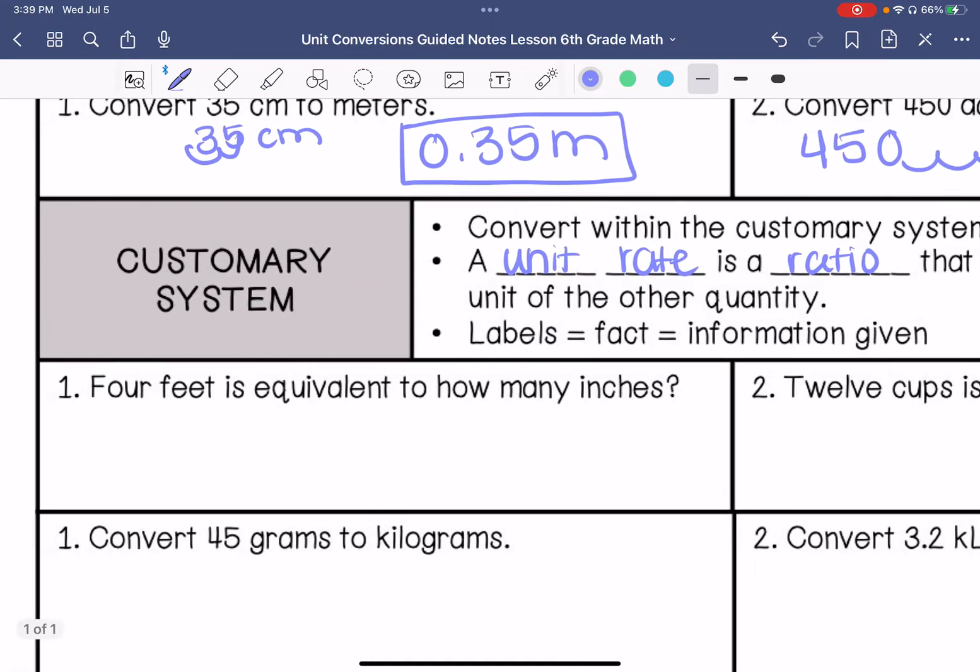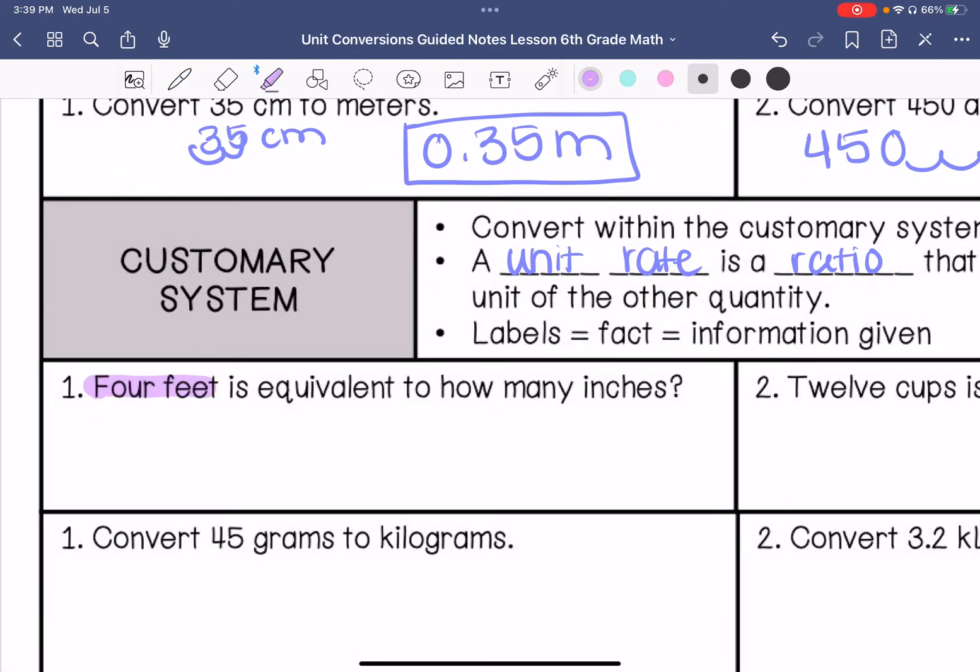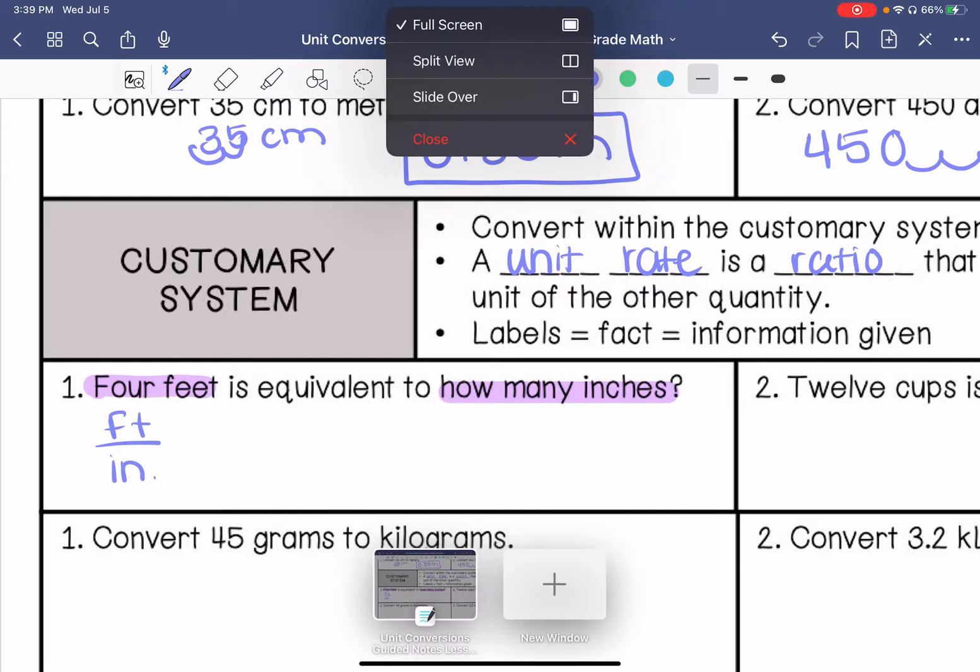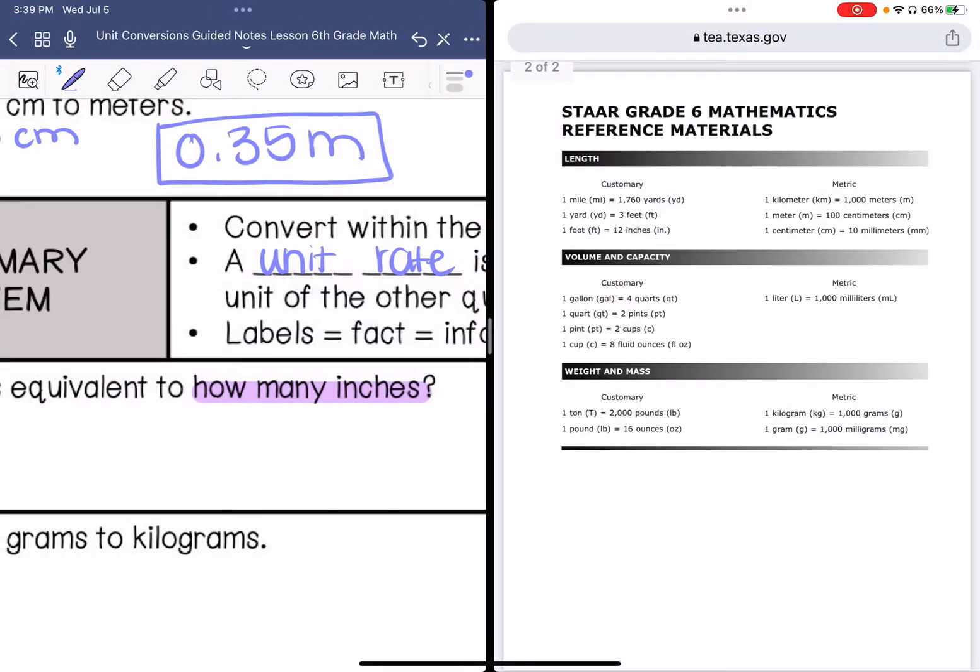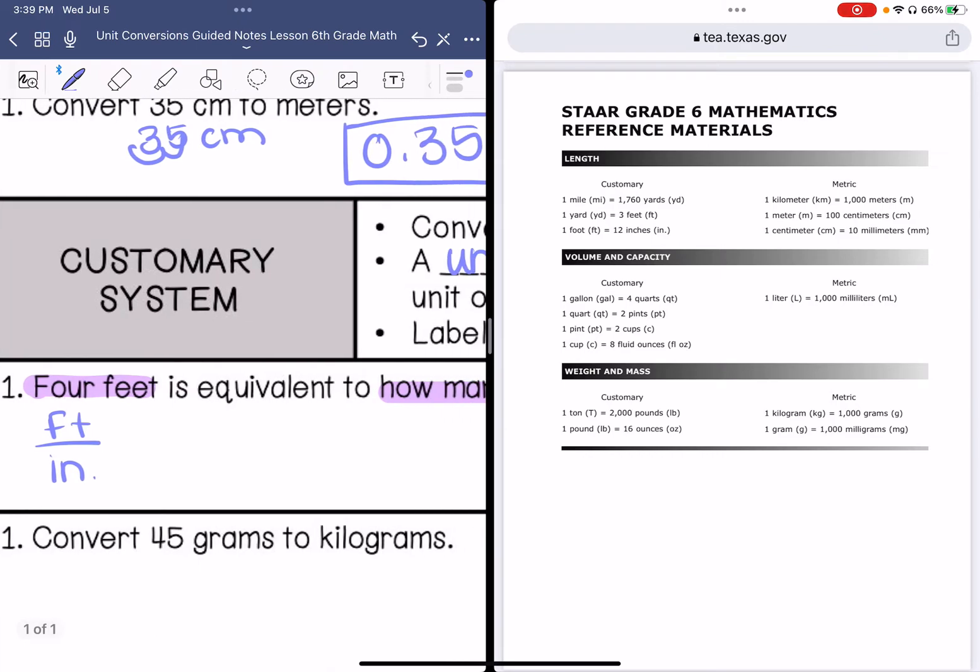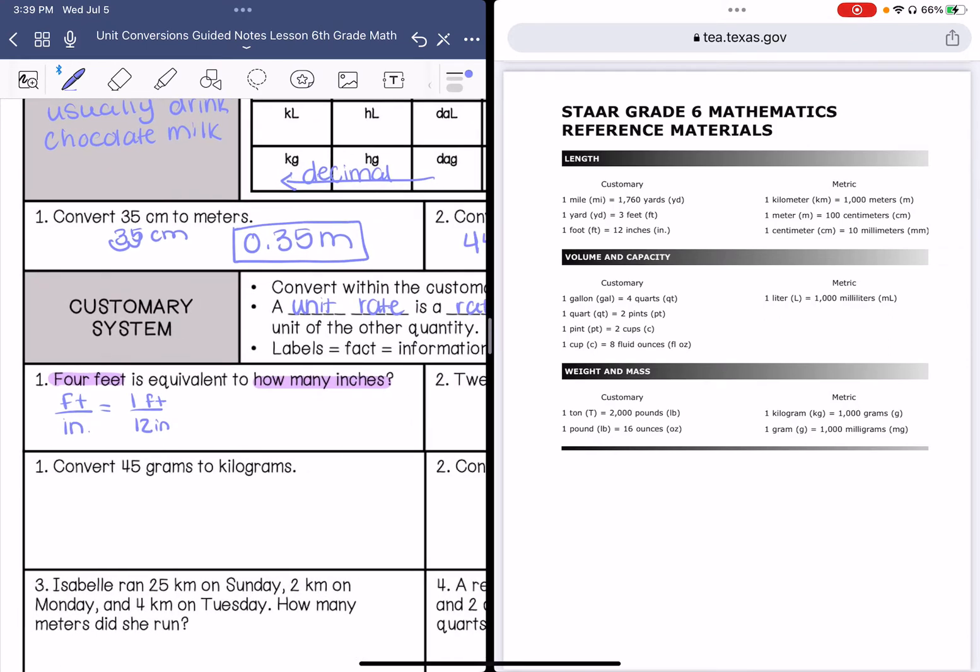For example, it says four feet is equivalent to how many inches. So I'm going between feet and inches. I'm going to pull up my STAAR reference chart, and it says that one foot is 12 inches, so that's my fact. My problem says I'm converting four feet to inches. So how do I get from one to four? I multiply by four. 12 times four is 48, so my answer is 48 inches.